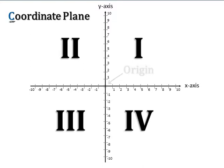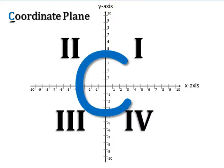An easy way to remember the quadrant numbers is that the word coordinate starts with the letter C, and to write a C in the middle of the quadrant plane, you start in quadrant 1, go counterclockwise to quadrants 2, 3, and end up at quadrant 4.